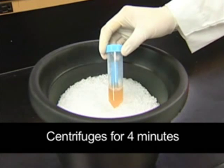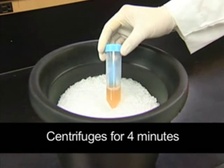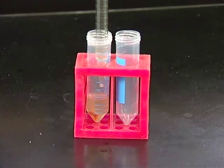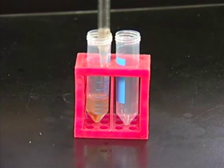After the 10 minutes are up, we centrifuge the tubes again at 2500 G for 4 minutes. After centrifuging, we remove the supernatant to another clean tube.